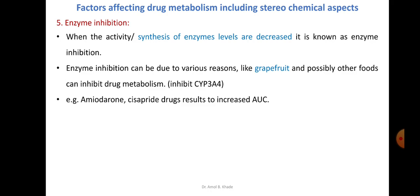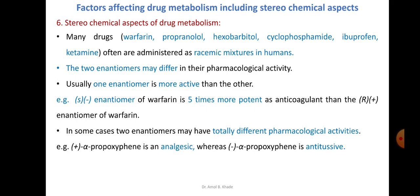Opposite to enzyme induction is enzyme inhibition, where the synthesis or activity of enzymes in the body is decreased. One important cause of enzyme inhibition is grapefruit and certain other foods. These foods inhibit the CYP3A4 enzyme, which is responsible for biotransformation of some drugs. People consuming these foods while taking medications like amiodarone or cisapride will see an increased area under the curve for these drugs, demonstrating how enzyme inhibition affects the rate of drug metabolism.